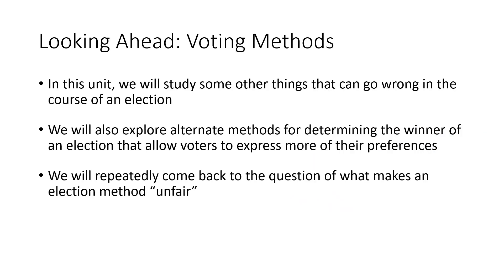We're going to be looking ahead at some other things that can go wrong in the course of an election. We'll look at alternate methods for determining the winner that allow voters to express more of their preferences and help deal with this problem of people feeling stuck with a winner they didn't want. And we'll repeatedly return to the question of what makes an election method unfair.